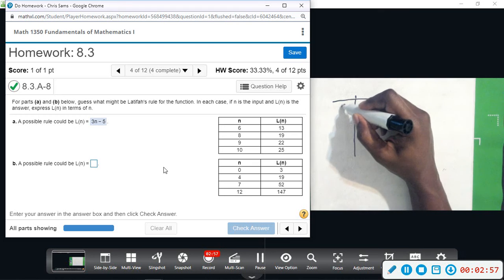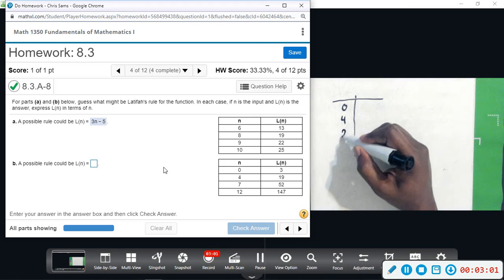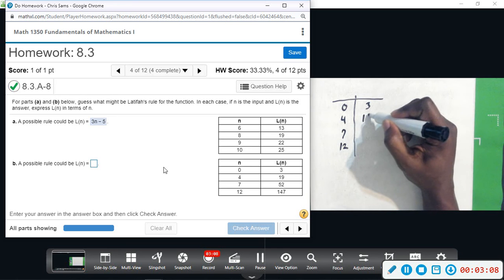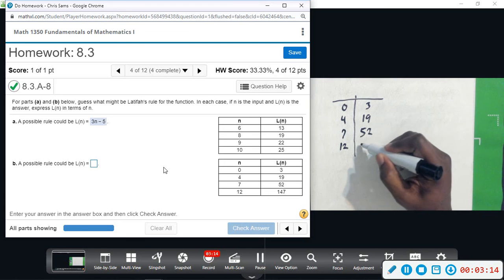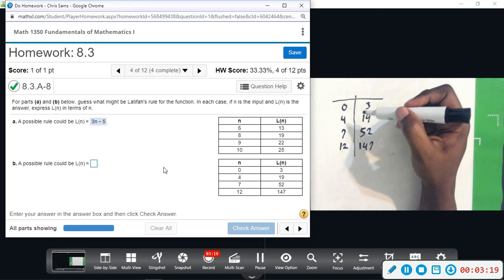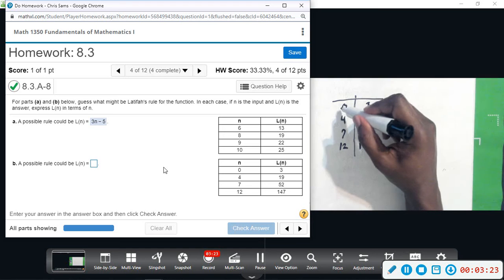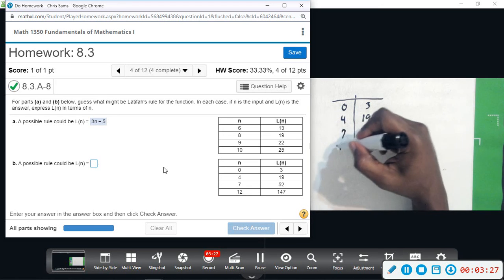Start with zero, then four, and then seven, then twelve. Okay, and then we have three, nineteen, fifty-two, one forty-seven. Okay, I would normally try to find a common difference, but they're not counting by the same every time. Like the difference here is four and then it's three and then it's five, so I'm not getting a consistent one.